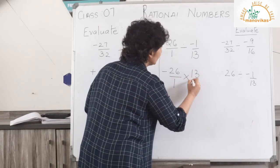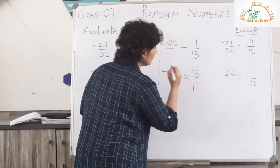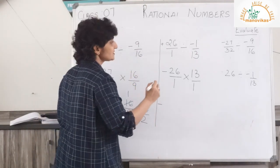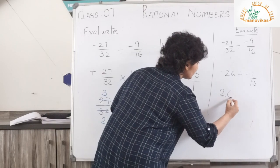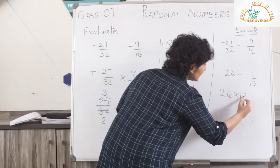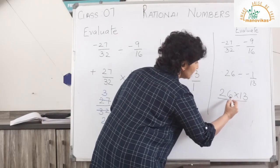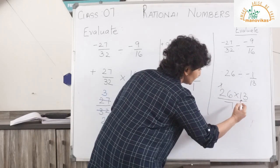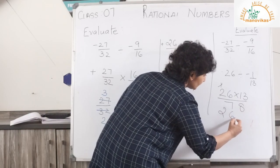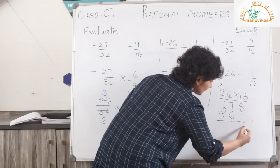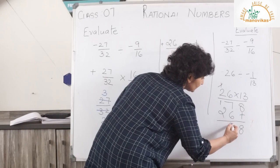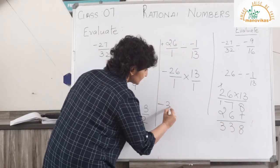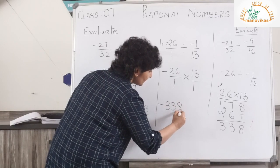Let's not forget the sign — it's minus. Now in my rough column, let me multiply 26 into 13: 3 sixes are 18, 3 twos are 6 plus 1 is 7, and 26 ones are 26, so I get 338. Therefore my answer is minus 338.